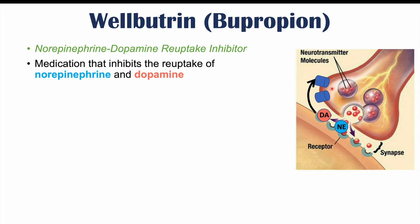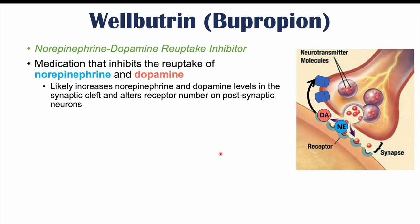These reuptake pumps are going to be on the presynaptic neuron. They essentially suck up the neurotransmitters back into the presynaptic neuron. But this medication inhibits those reuptake pumps, so it's going to leave more norepinephrine and dopamine in the synapse, and ultimately will lead to changes in the receptor number on the postsynaptic neuron. This is probably how this medication functions.